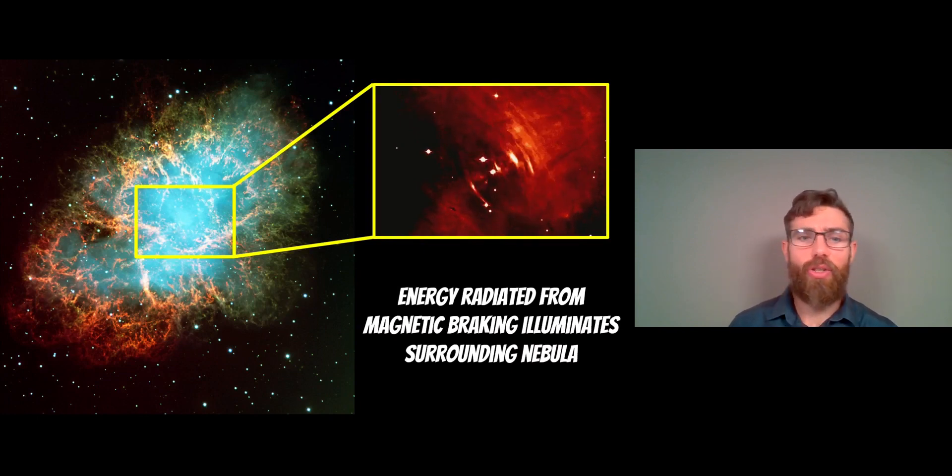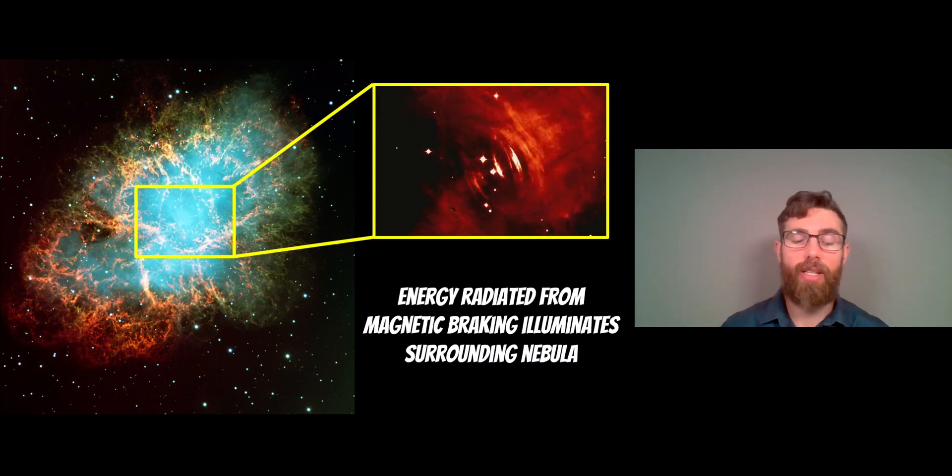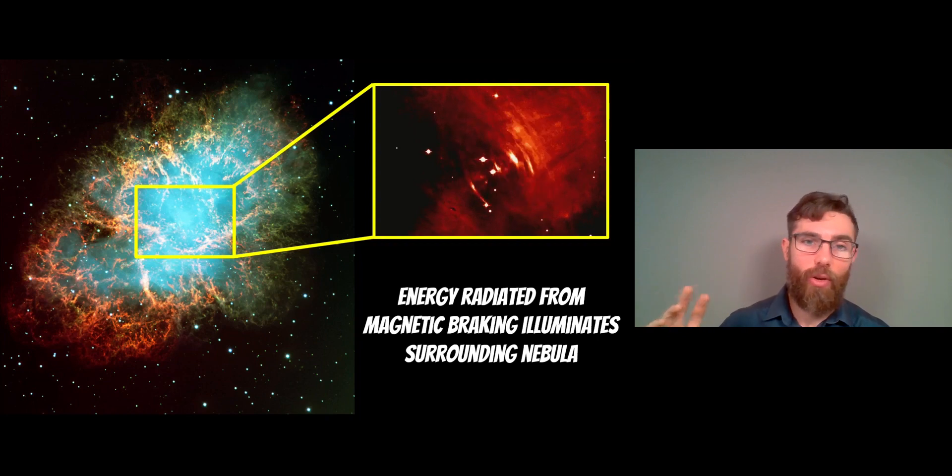That rotational energy, and there's an enormous amount of it, is radiated away due to the magnetic braking and illuminates the surrounding nebula. This is the Crab Nebula, and you can see an animation there where that rotation energy is illuminating the surrounding nebula. That magnetic braking which is slowing it down—there's an enormous amount of energy there being lost that radiates into the surrounding nebula, which is then illuminated.